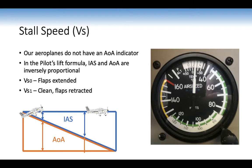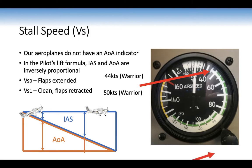The stall speeds are: VSO — flaps extended — indicated by the bottom of the white arc, which is 44 knots for the Archer, and 45 knots for the PA28. VS1 — clean stall speed — is at the bottom of the green arc, which is 50 knots. When you increase angle of attack you can decrease indicated airspeed to maintain constant lift, but past 16 degrees there's an interesting scenario where lift decreases and indicated airspeed decreases but angle of attack increases — that's the path of the stall.